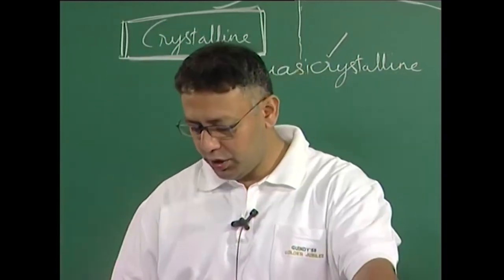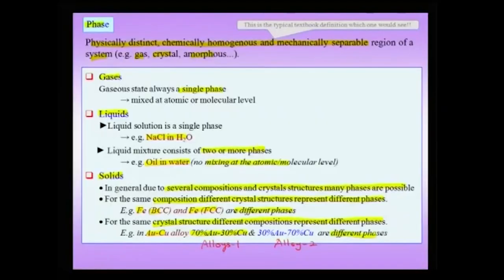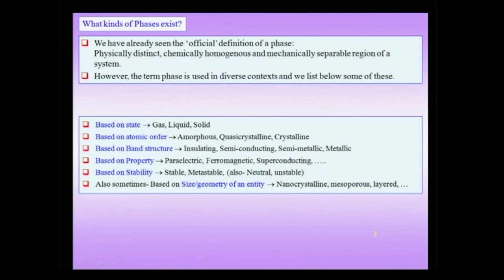As I pointed out, we have a textbook definition of a phase which says it is a physically distinct, chemically homogeneous, and mechanically separable region of a system, like a gas, crystal, or amorphous phase. But it is worthwhile to ask what kind of phases exist and what the basis of definition of different kinds of phases would be. We will list a few, because often when you read literature or a textbook, you may find usage of some of these terms.